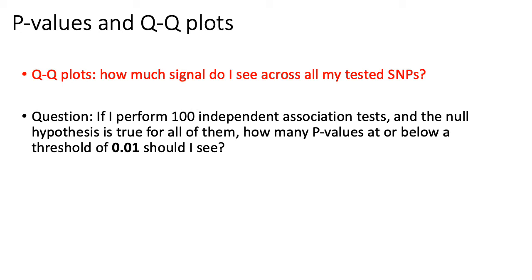We talked previously about some of the problems of performing multiple hypothesis testing. Part of the problem is that the more tests you perform, the more likely you're going to see a small p-value by chance. A QQ plot is basically just another way of visualizing how many essentially false positives or false negatives you might see across all the SNPs that you test.